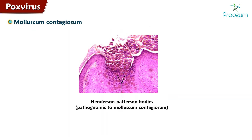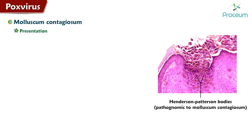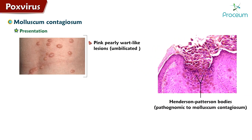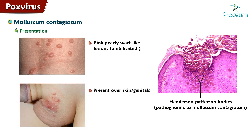Molluscum contagiosum infection causes pink, pearly, wart-like lesions that are umbilicated with a characteristic dimple at the center, present over the skin or genitals.